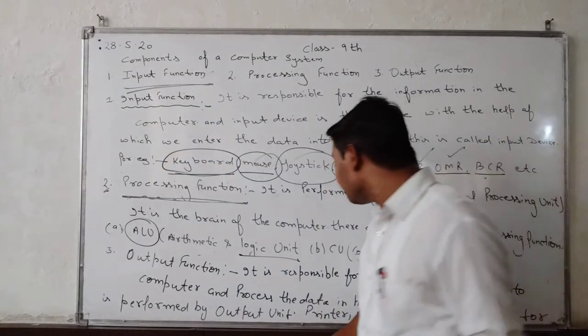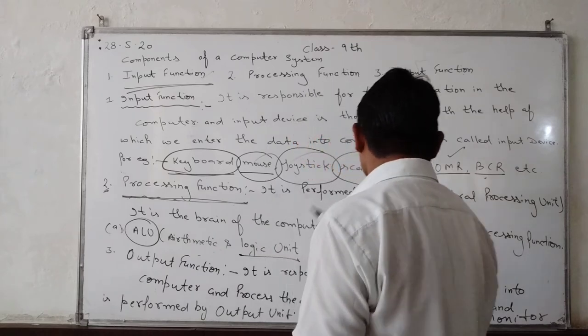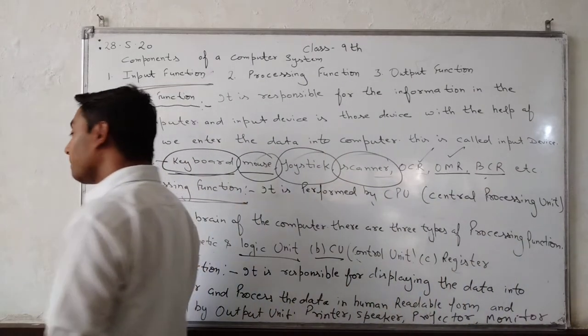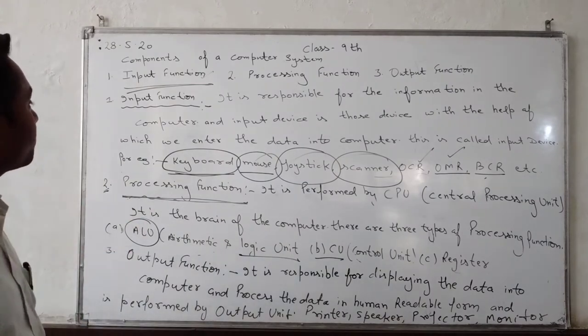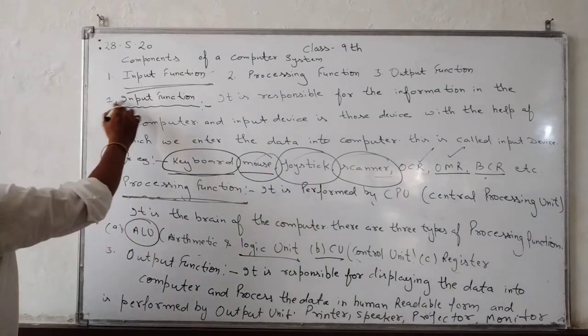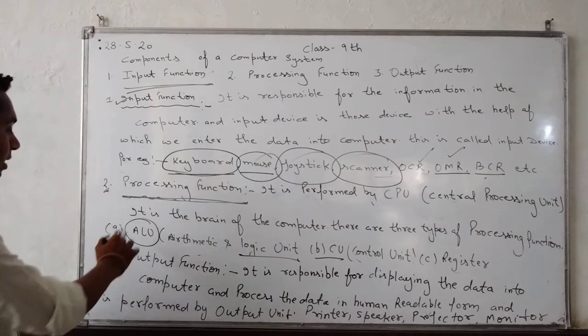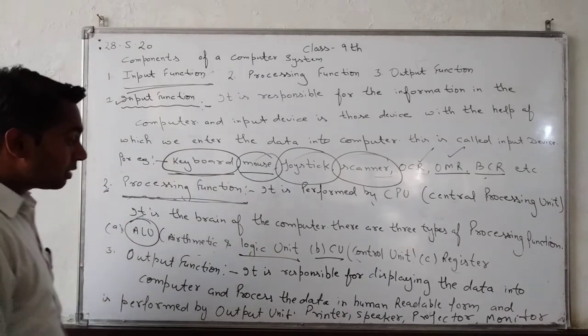Next CU. CU is the full form of control unit and control unit is control of all parts of the computer. For example, input device, second arithmetic unit, third logic unit.